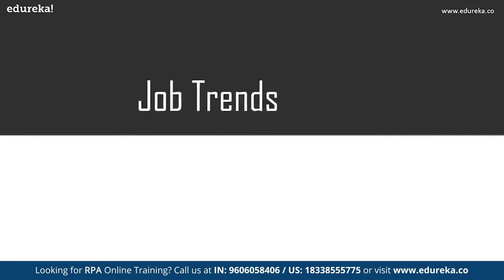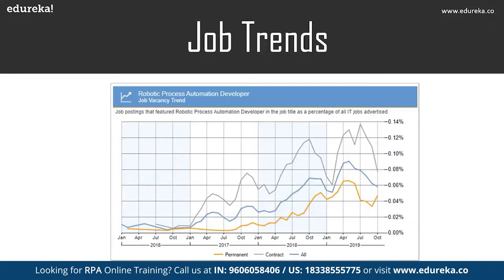The job trends of an RPA developer show a graph that is continuously growing and job vacancies are continuously increasing. This is mainly because people have heard of robotic process automation but nobody exactly knows how to do it or which tasks can be automated. To illustrate with an analogy: if you have a group of six software developers and ask how many know Java, most will; but if you ask how many know how to automate using UiPath, Blue Prism, or Automation Anywhere, hardly any will. Once you get started with RPA, you'll have a lot of job opportunities.